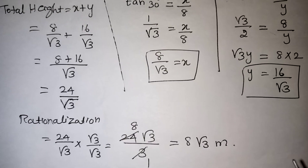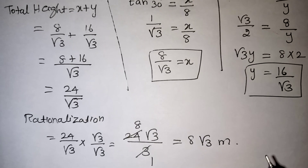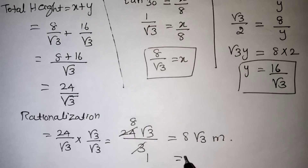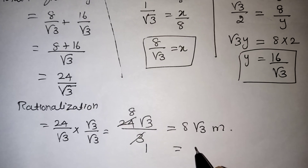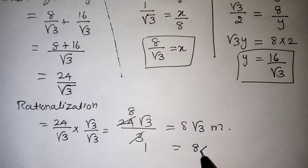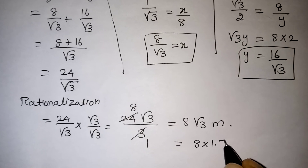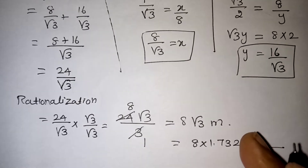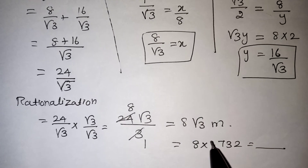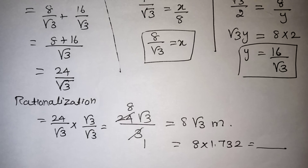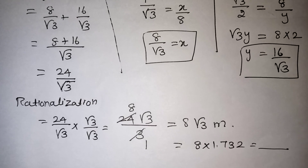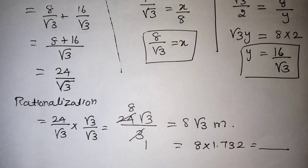If in the exam they ask you to write the answer in decimal, you can calculate 8 times 1.732, since root 3 equals 1.732. Thank you students for watching. If you like our video, please subscribe to our channel for more videos. Thank you.